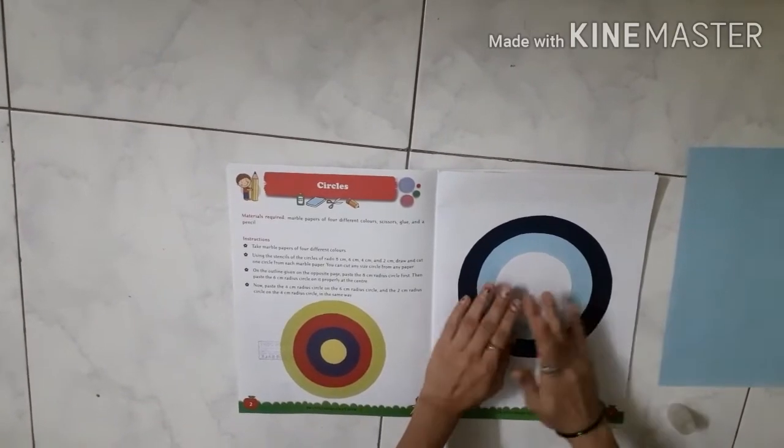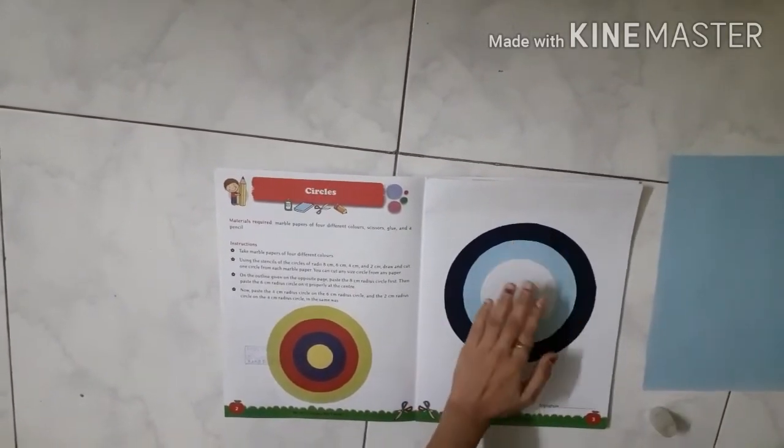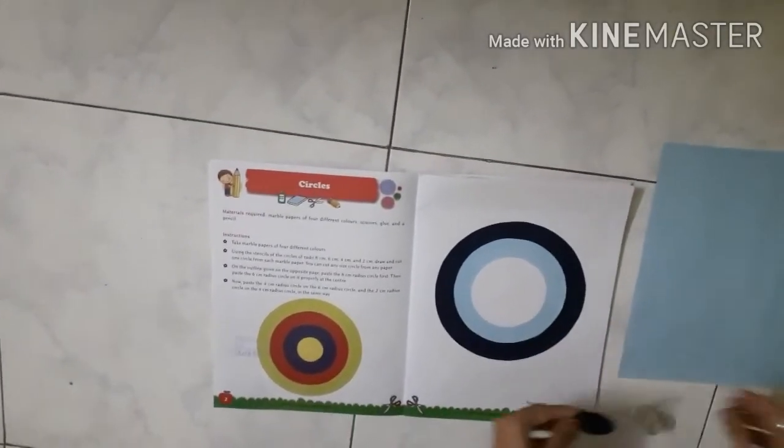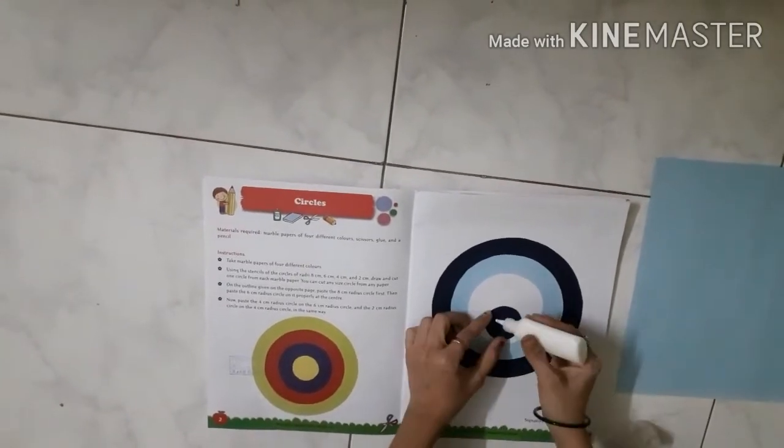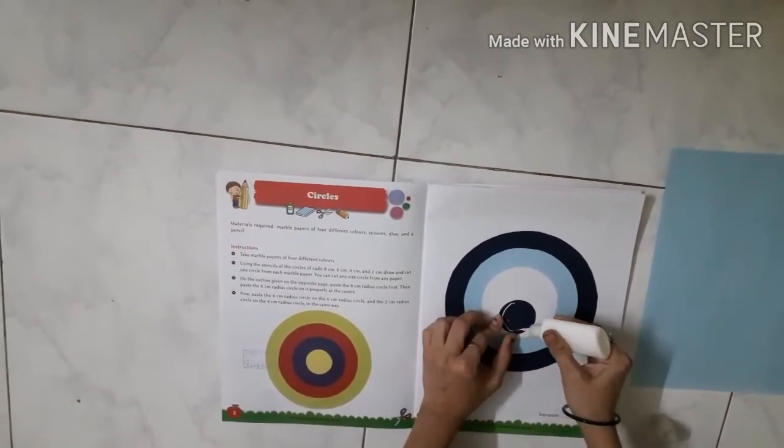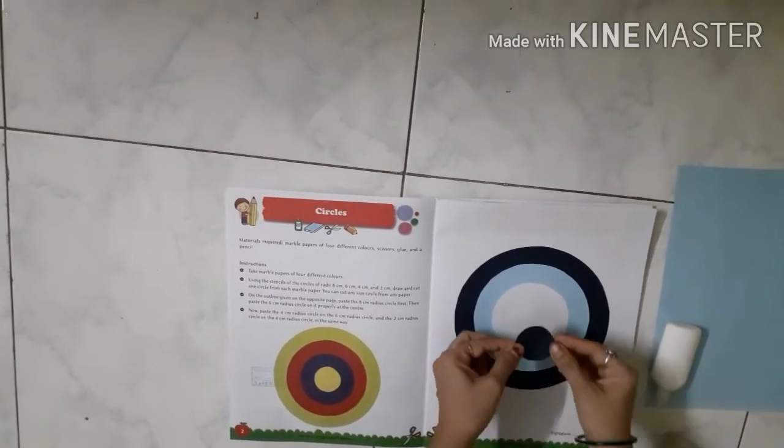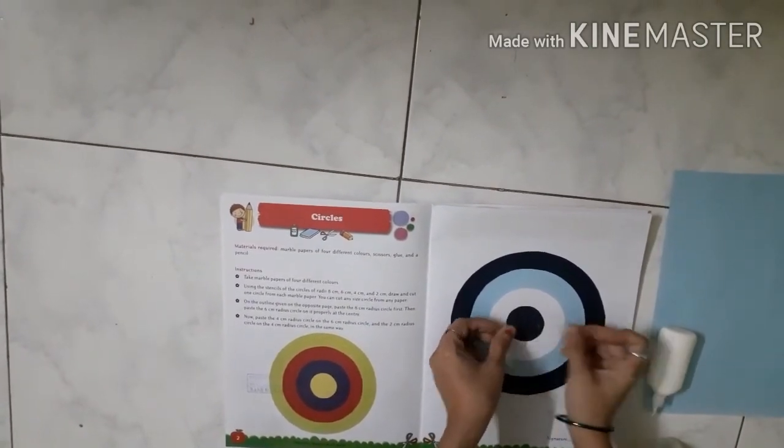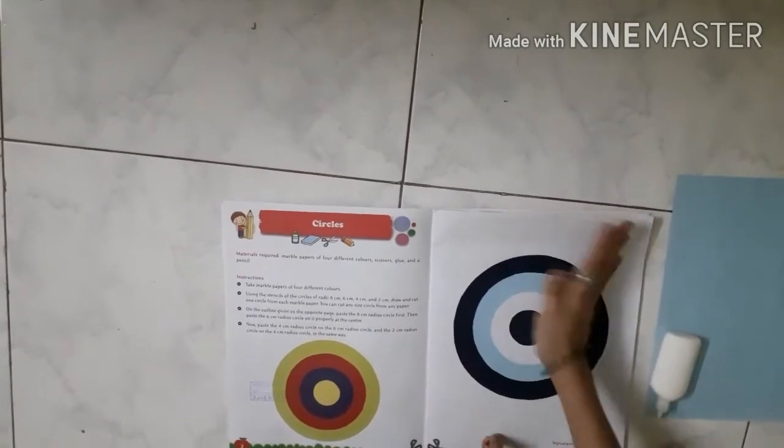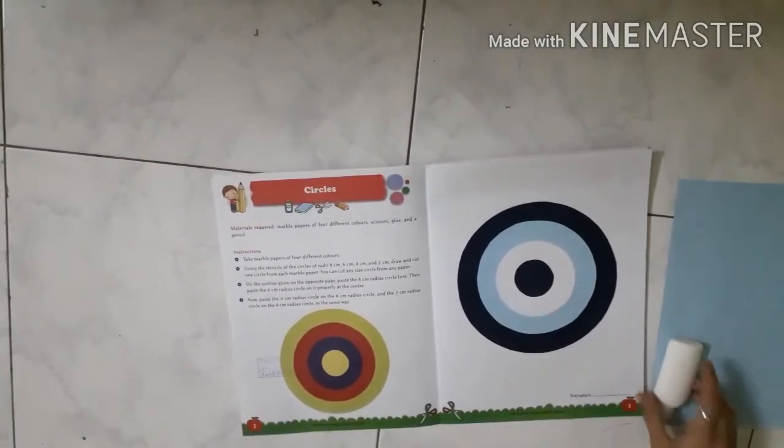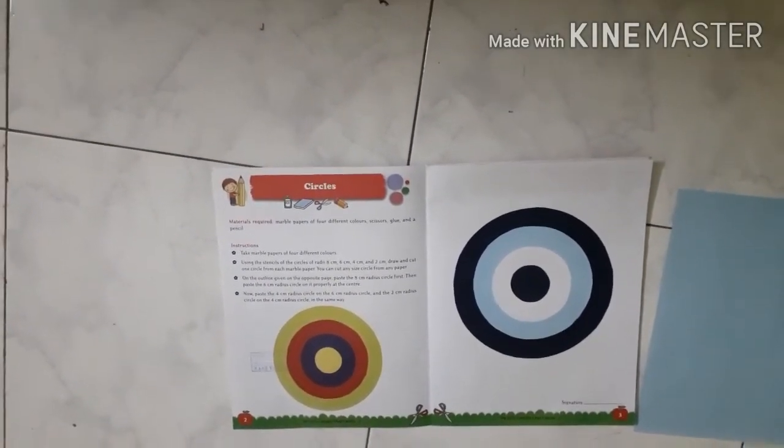Last, we'll take the two centimeter circle and stick it in the middle. Now see, this looks good with all the circles creating a pattern.